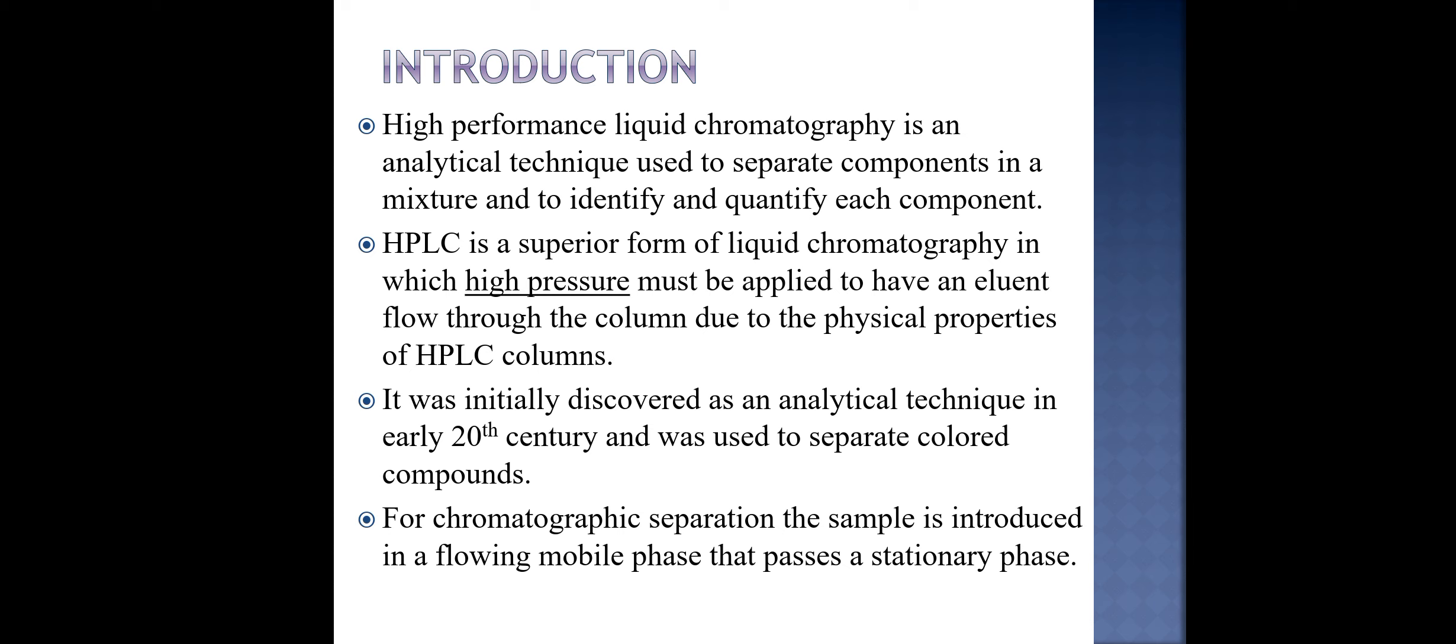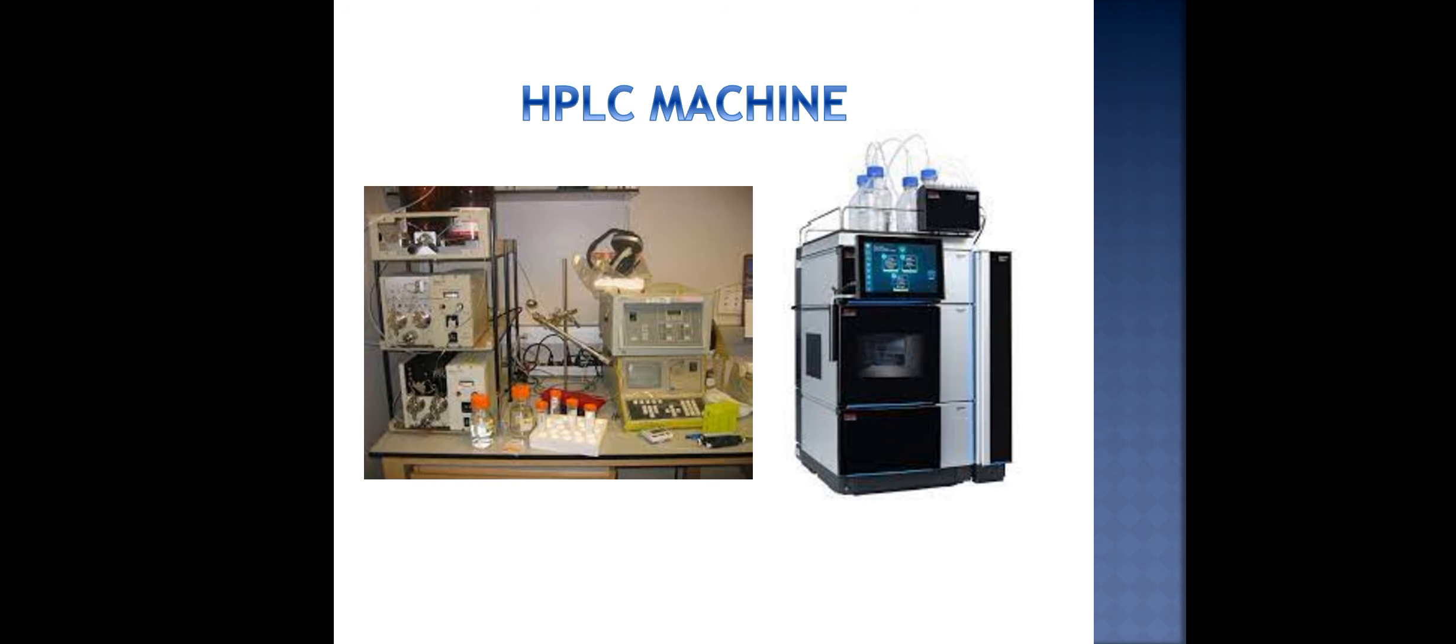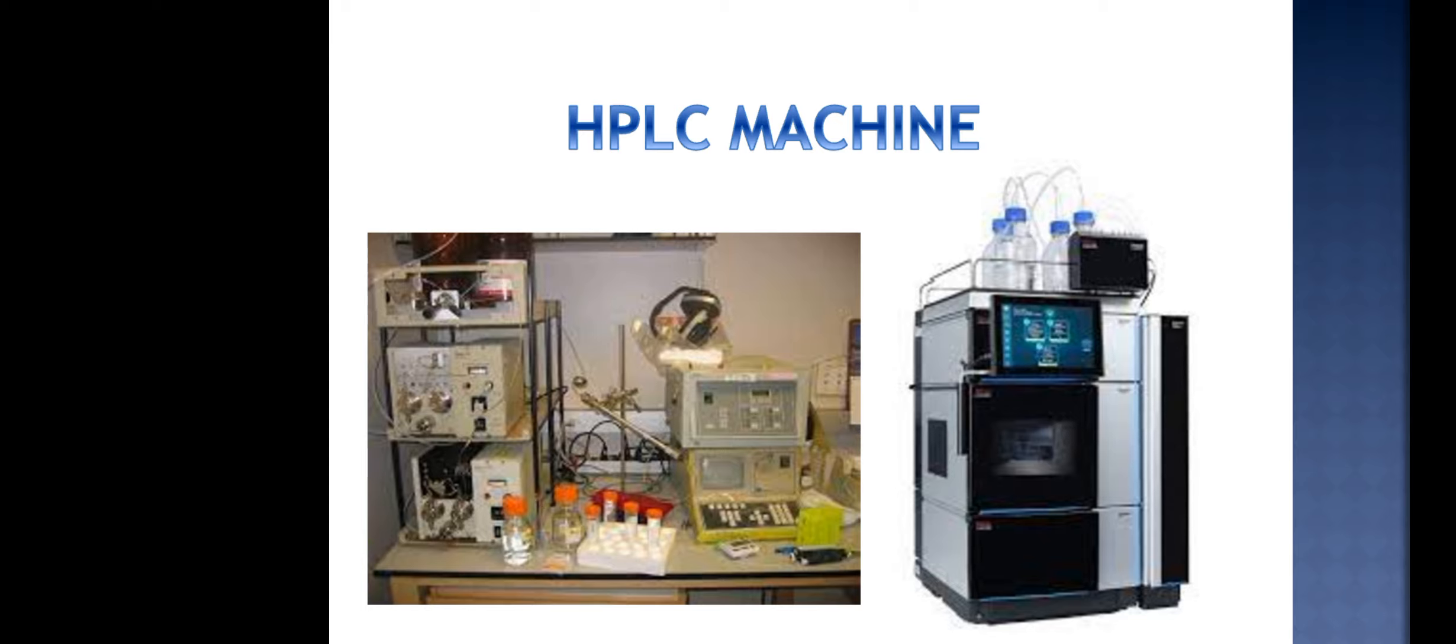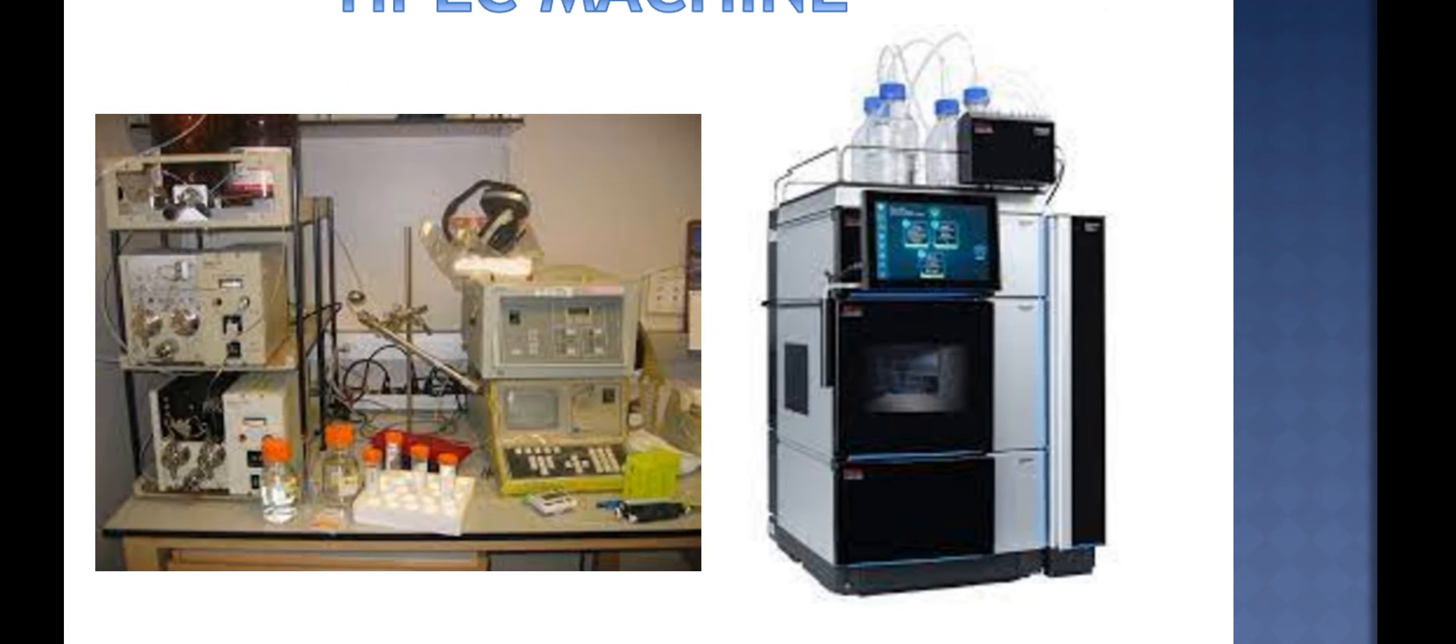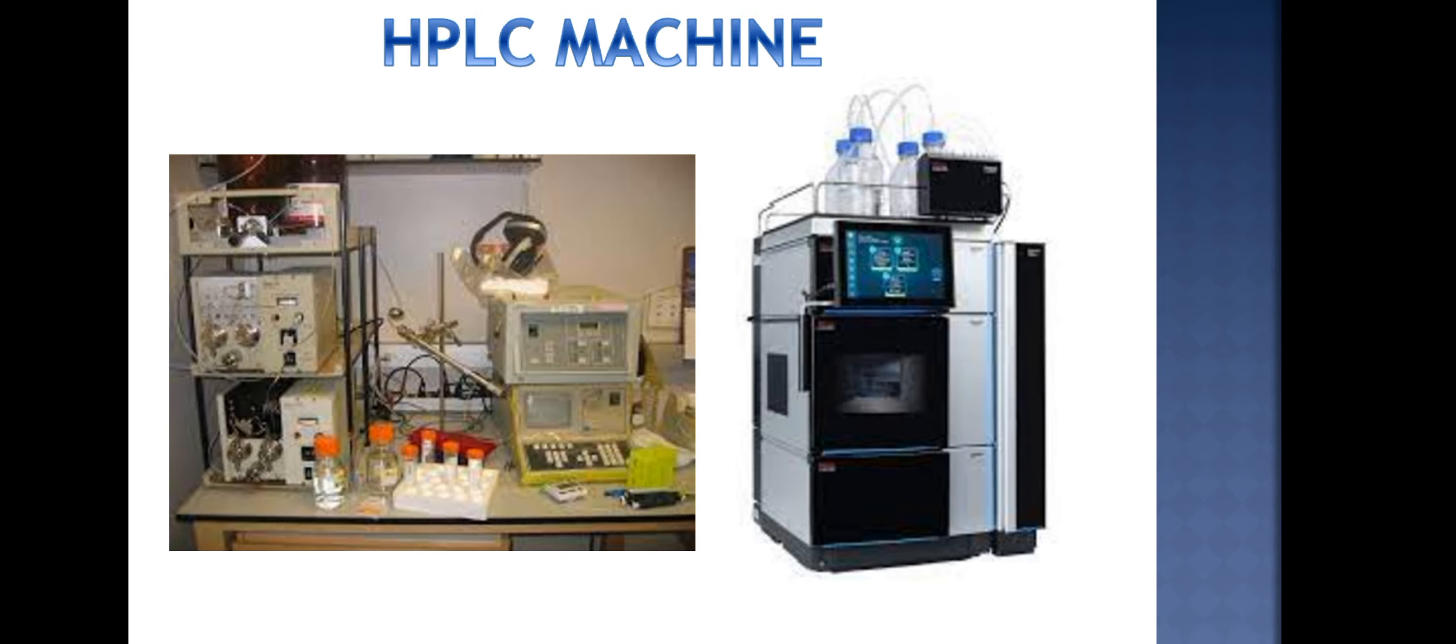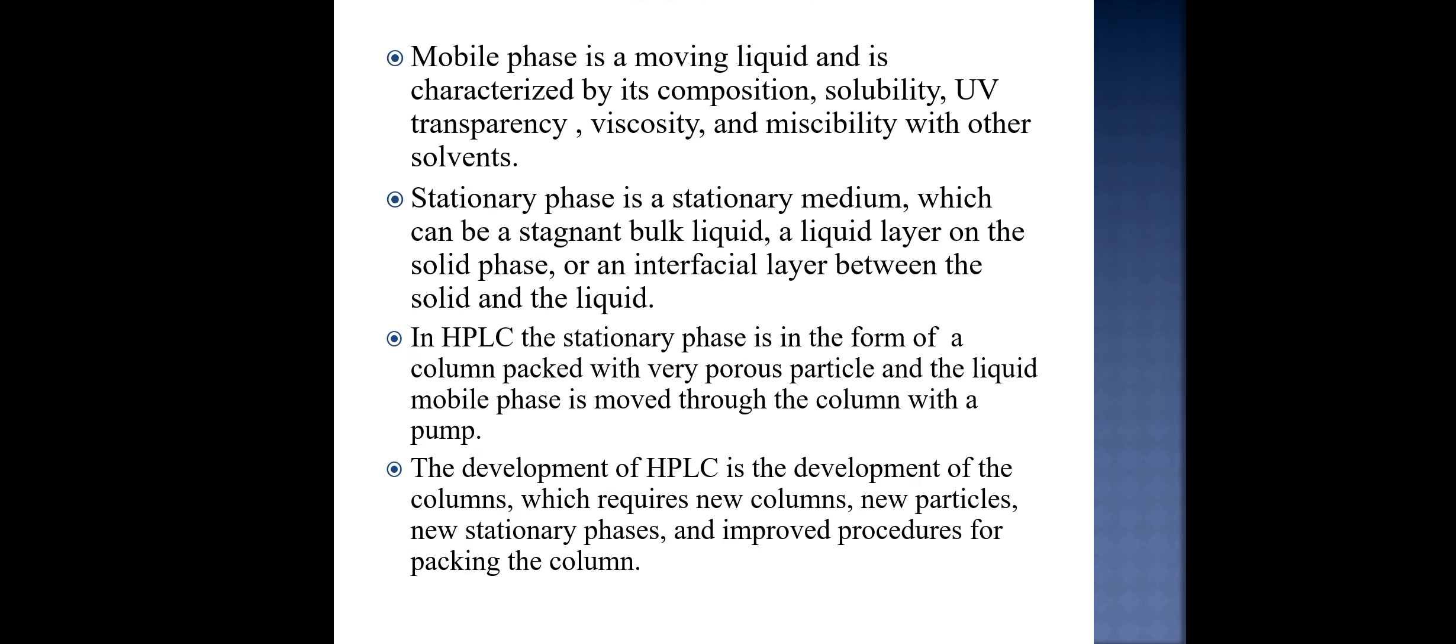For chromatographic separation the sample is introduced in a flowing mobile phase that passes a stationary phase. This is basically the HPLC machine which constitutes of pressure gauge and high pressure is applied to the column for better suppression and elusion.